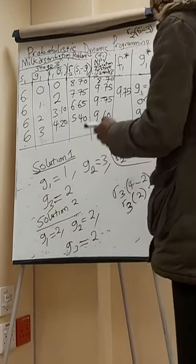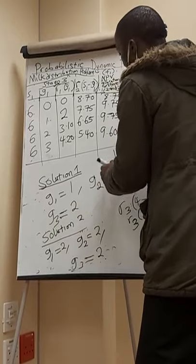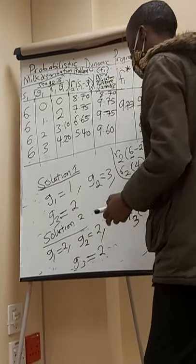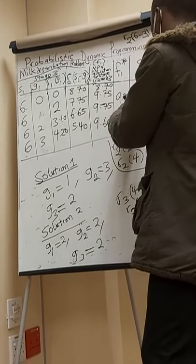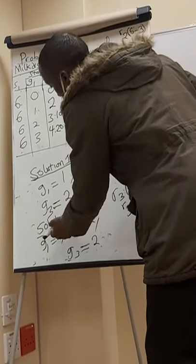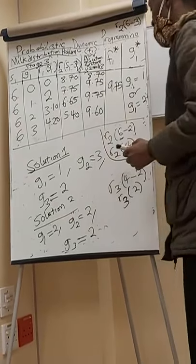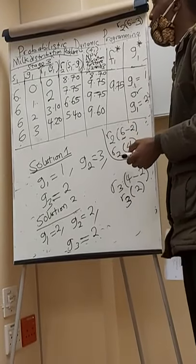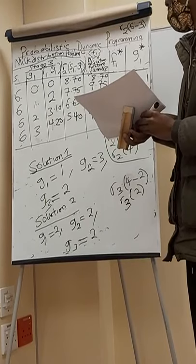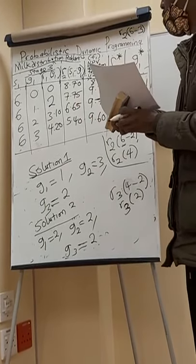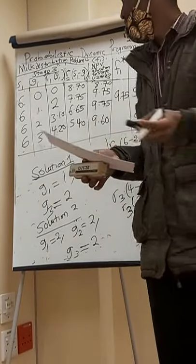So the two possible allocation solutions for this milk distribution problem are: Solution 1 — allocate 1 gallon of milk to store 1, 3 gallons of milk to store 2, and 2 gallons to store 3, making a maximum revenue of $9.75. Or another allocation: allocate 2 gallons to store 1, 2 gallons to store 2, and 2 gallons to store 3, also making a maximum revenue of $9.75. I would implore you to try all the tutorial questions and make sure you understand this concept well. We'll look at more examples in another session.